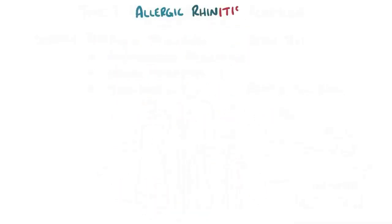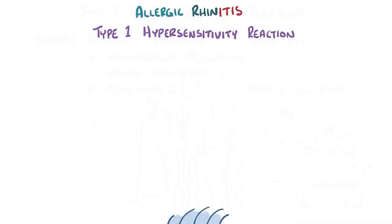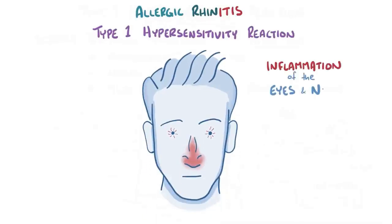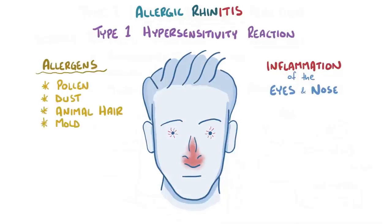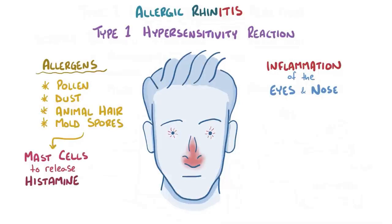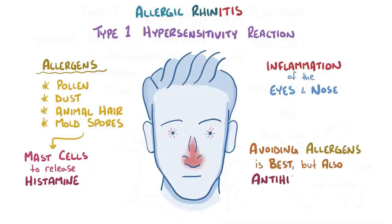As a quick recap: allergic rhinitis is a type 1 hypersensitivity reaction which results in inflammation of the eyes and nose. Airborne allergens like pollen, dust, animal hair, or mold spores cause mast cells in the tissues to release histamine, causing the eyes and nose to get inflamed and watery. Avoiding allergens is the best approach, but it's also possible to use antihistamines and in severe cases try desensitization to reduce or eliminate the symptoms.